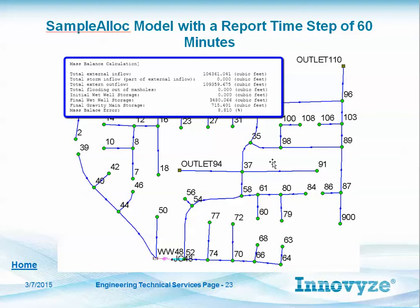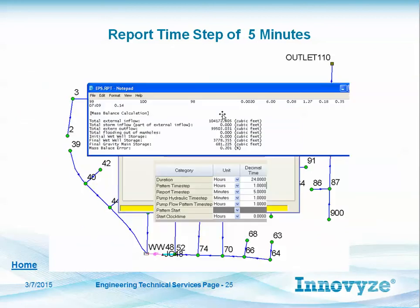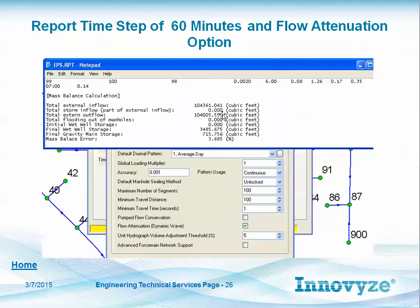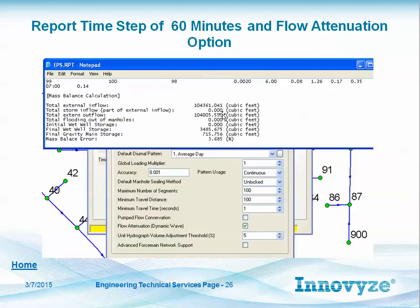At a report time step of 60 minutes there's an 8.8% continuity error. Lowering it to 30 minutes brings it down to less than 1%. At five minutes it improves further. You can control that by controlling the report time step. Options include changing the maximum number of segments, minimum travel distance, flow attenuation, and whether to use the advanced force main solution.